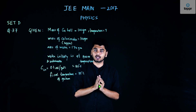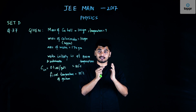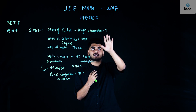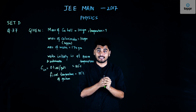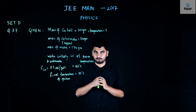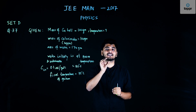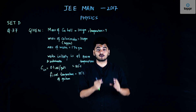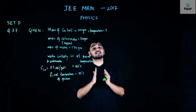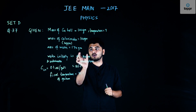In this question we have been given a copper ball which was at an initial temperature capital T — a temperature we don't know. This copper ball was then dropped into a calorimeter of copper containing water. The mass of the copper ball is 100 grams, the mass of the calorimeter is 100 grams, and the mass of the water contained inside the calorimeter is 170 grams.